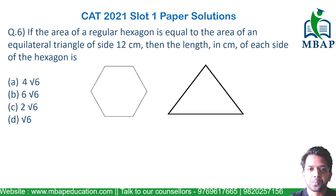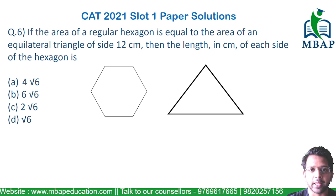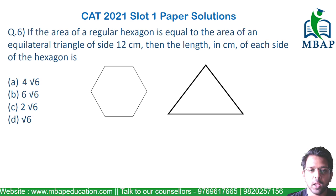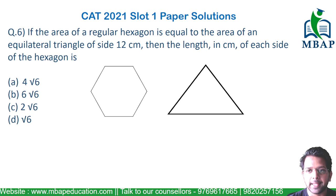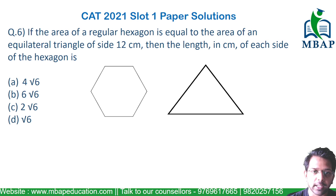Let's take the next question. Read the question well — it's a very easy question what they have asked you. The question says: if the area of a regular hexagon is equal to the area of an equilateral triangle of side equal to 12 cm, then the length in cm of each side of the hexagon is what we have to find out.